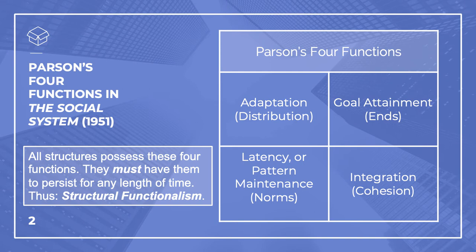2. Goal attainment. Parsons says an action system must outline and organize itself according to needs. Problems need to be identified and decisions need to be made. Information processing and organization happens at the level of perceptions in living creatures, or in terms of mass decision making, like governments. G is for goal attainment.